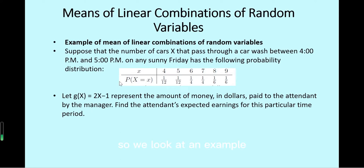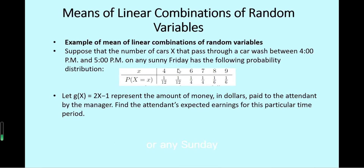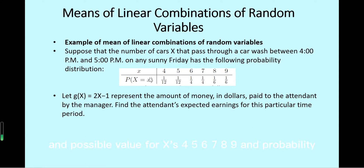Looking at an example: suppose that the number of cars x that pass through a car wash between 4 p.m. and 5 p.m. on any Sunday has the following probability distribution. x is a discrete random variable with possible values 4, 5, 6, 7, 8, 9, and their corresponding probabilities. We let g(x) equals 2x minus 1.